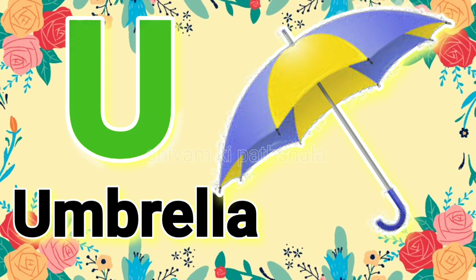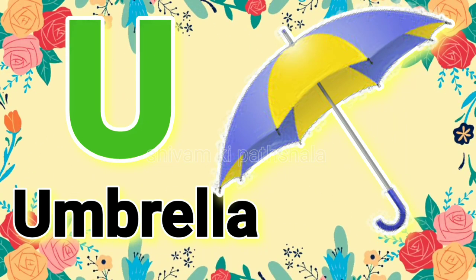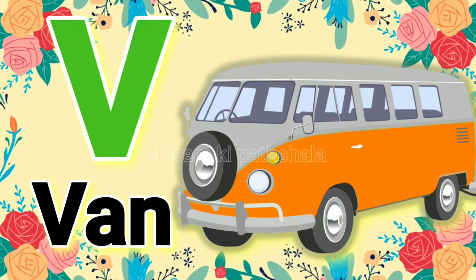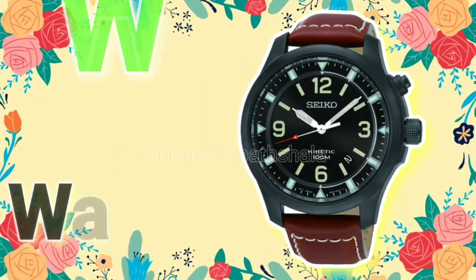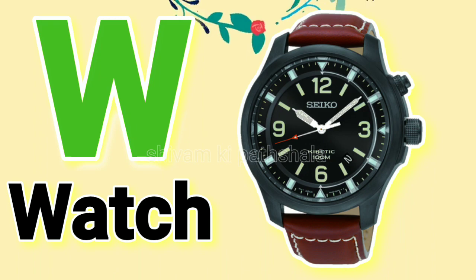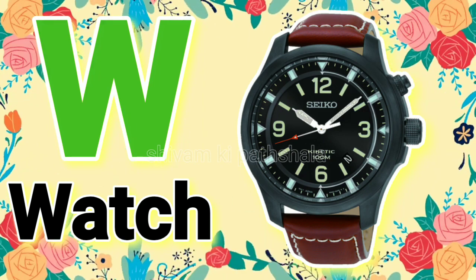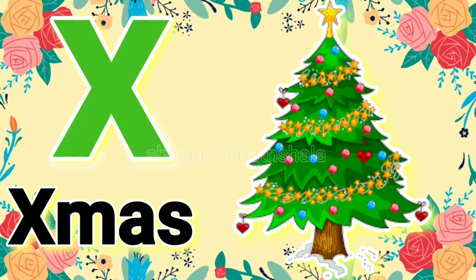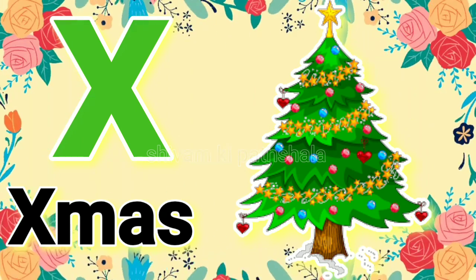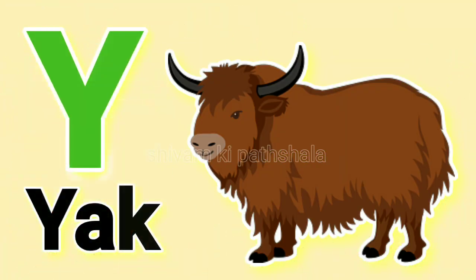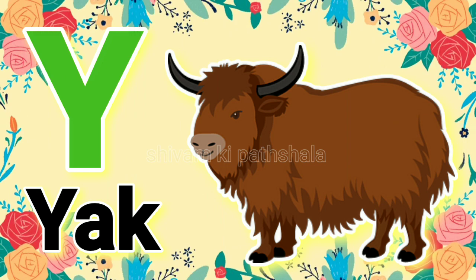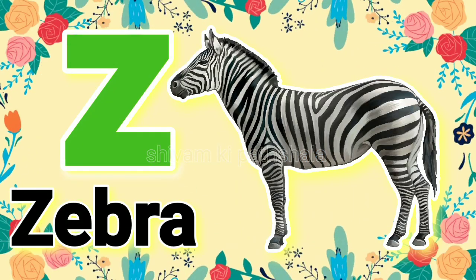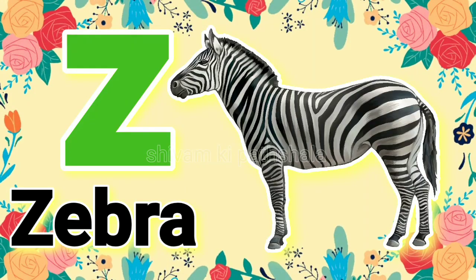U for umbrella. U for van. W for watch. X for Xmas. Y for yard. Z for zebra. Thank you.